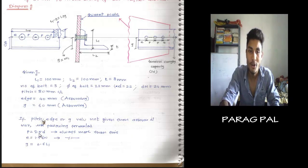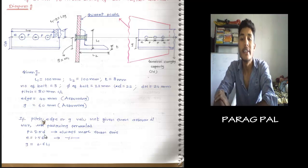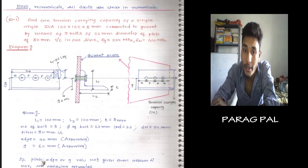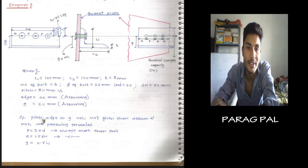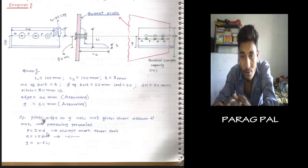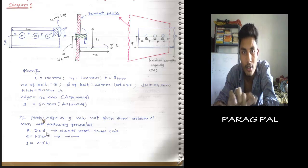The formulas are: pitch is given by 2.5 into D, where D is the provided bolt diameter — here D is 22 mm. Dn means D plus 2, so Dn is 24 mm. G is 0.6 into L1. Always round up — if it comes to 38, take it as 40. So use these formulas when edge distance or G is not given in the problem.